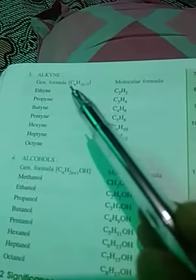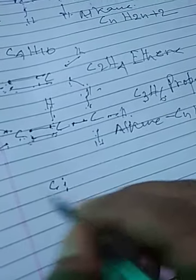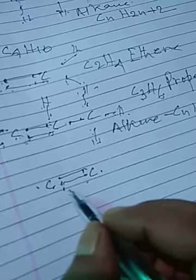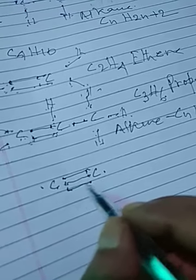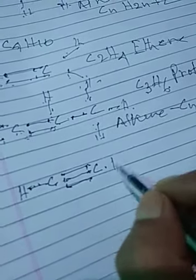After alkene comes alkyne. Its formula is CnH2n-2. In alkynes, two carbon atoms each share three electrons, forming a triple covalent bond. For example, two carbons each with four valence electrons sharing three electrons each gives the formula C2H2, which is called acetylene. Its IUPAC name is ethyne.